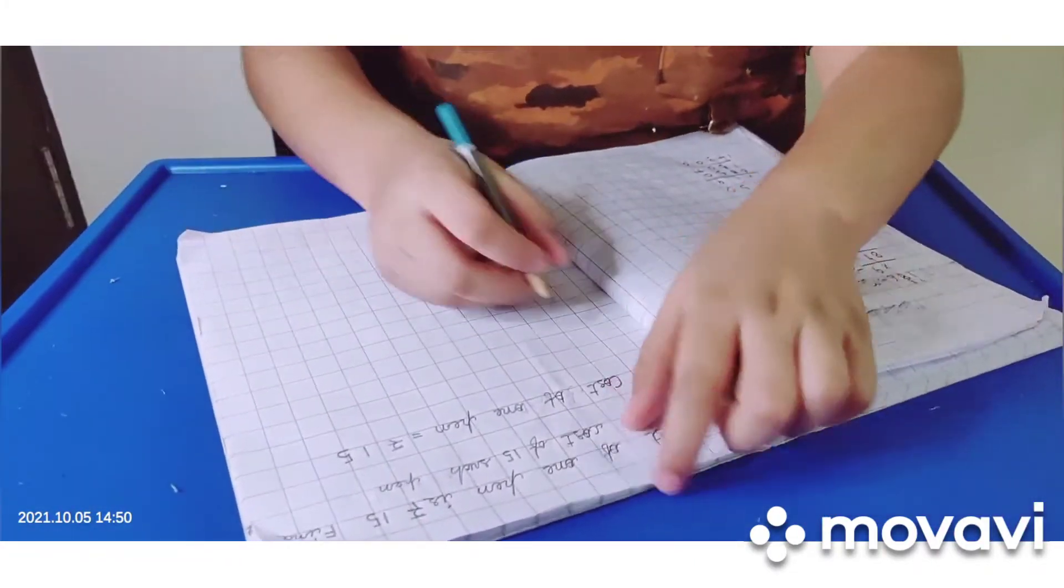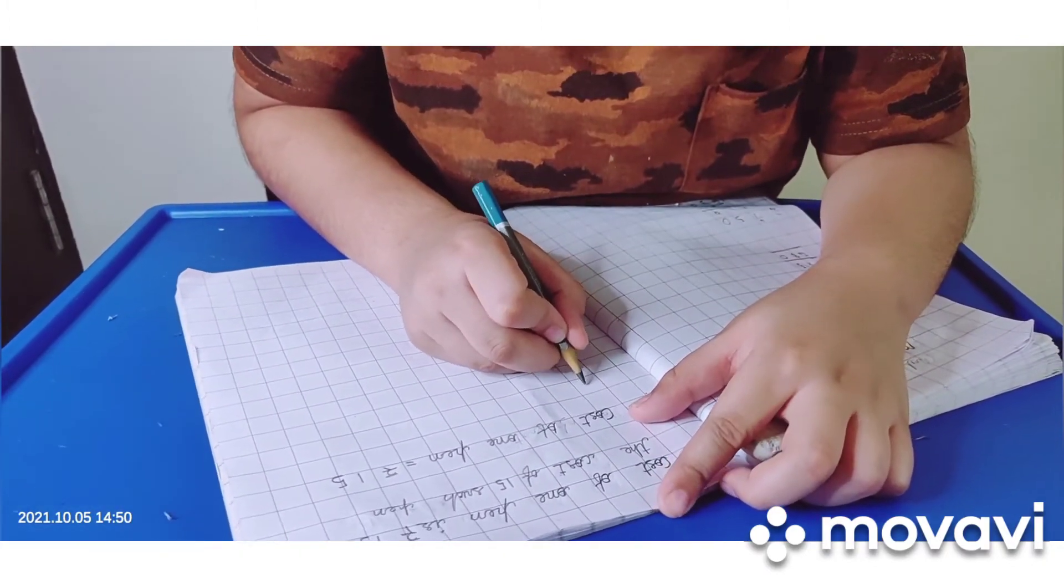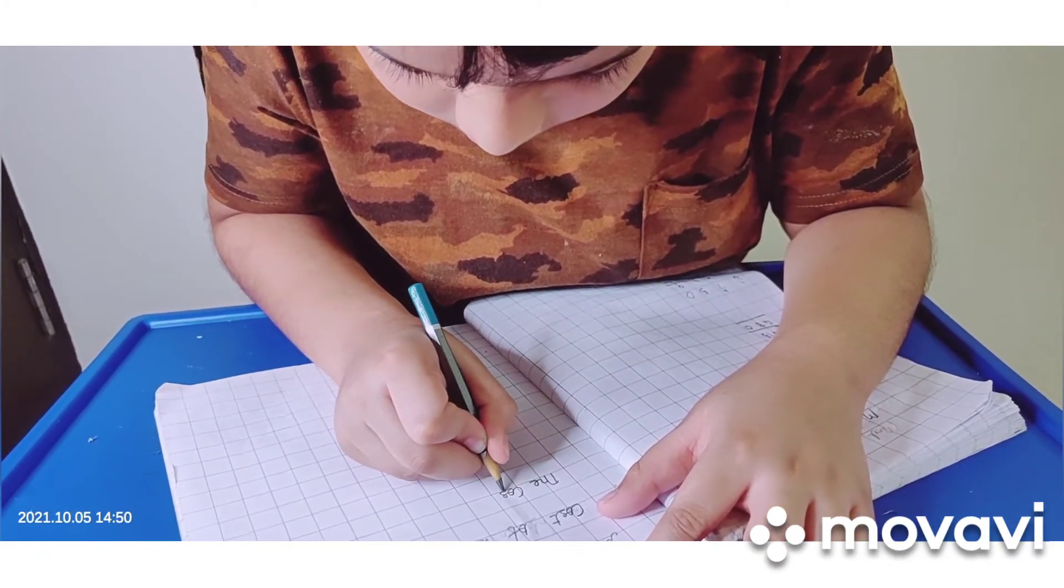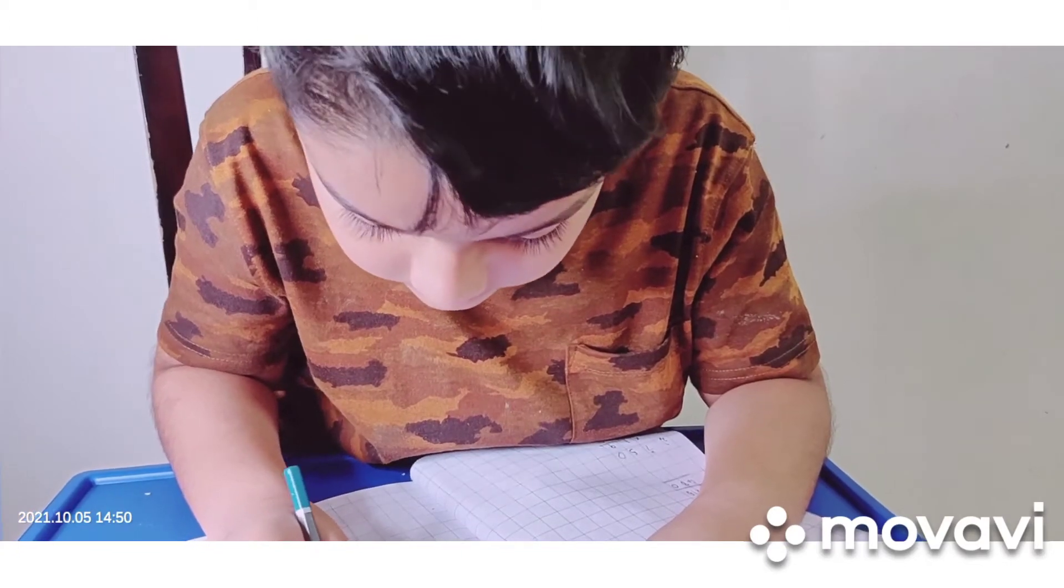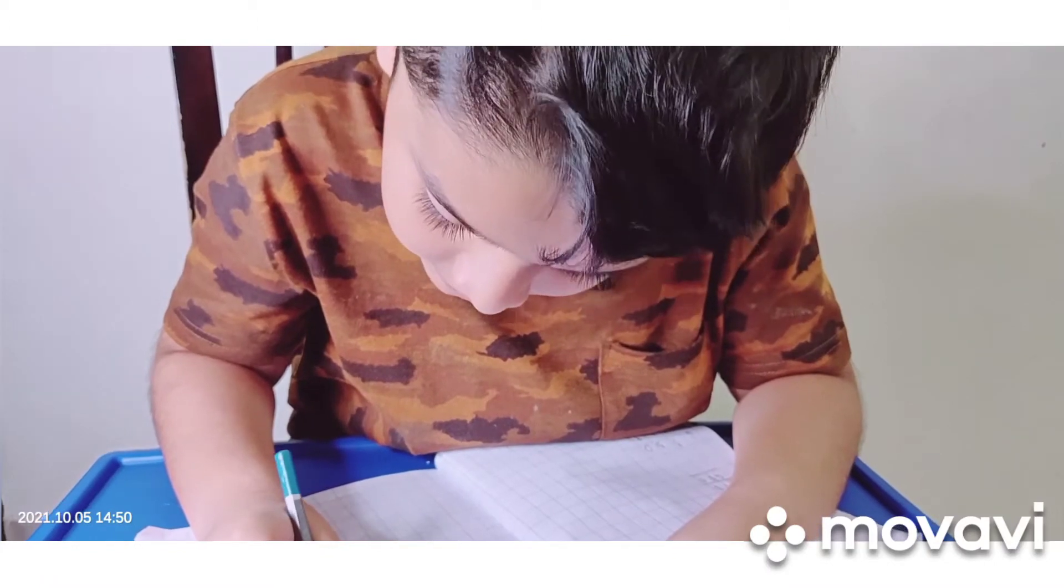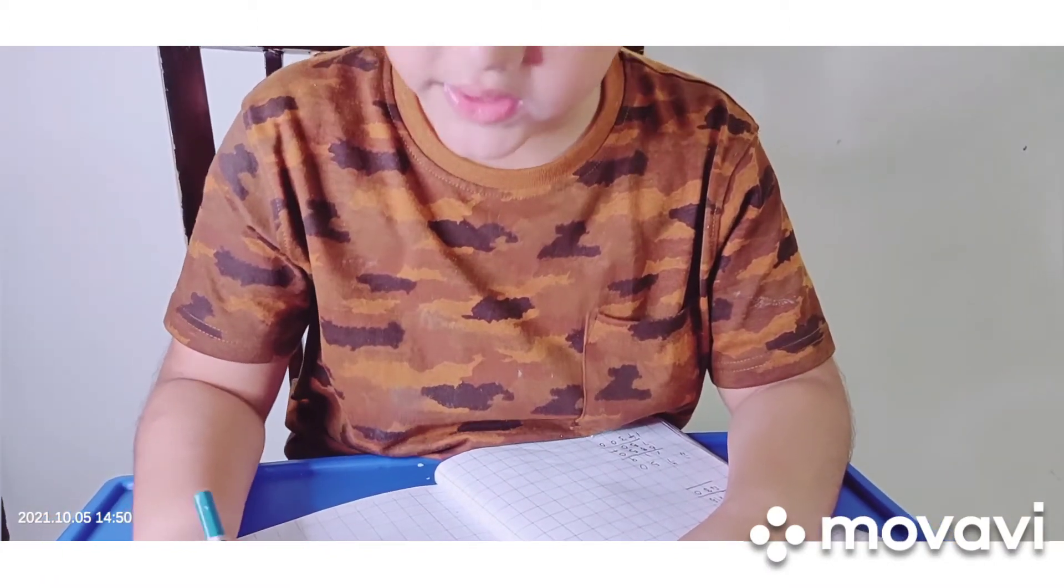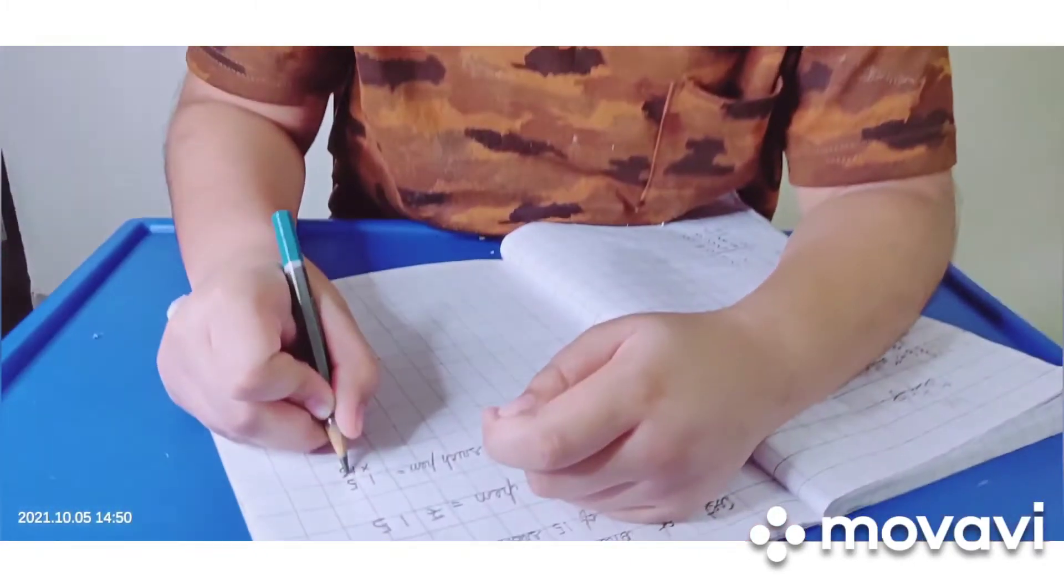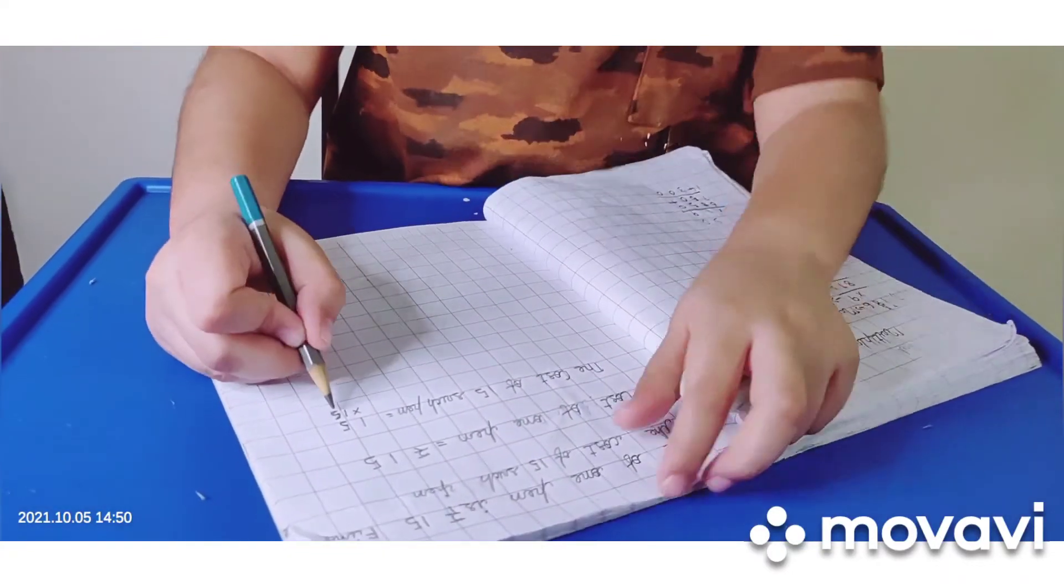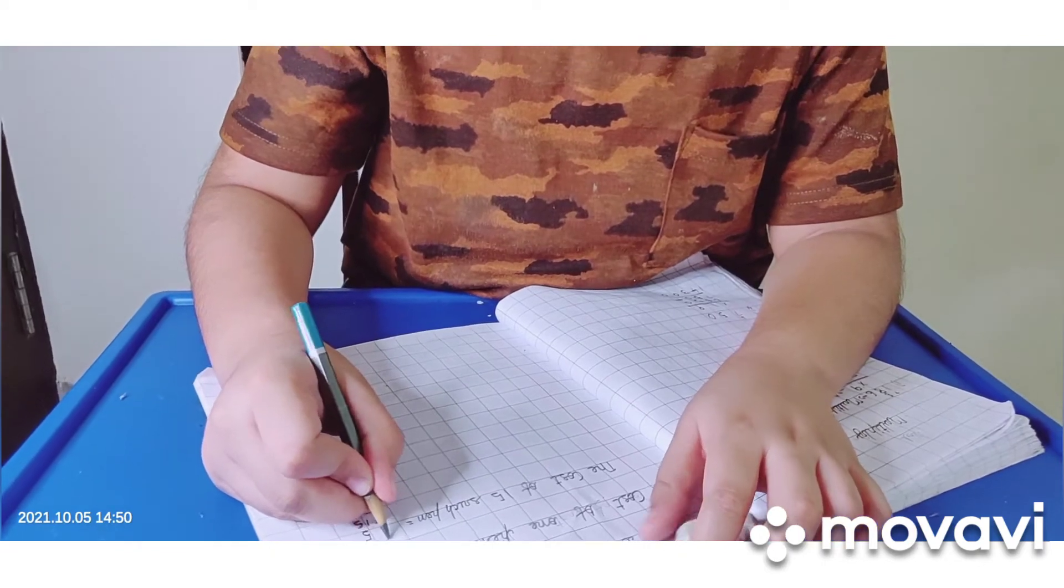Cost of 15 such pens: 15 into 15. Let me calculate: 15, 16, 17, 18, 19, 20, 21, 22.